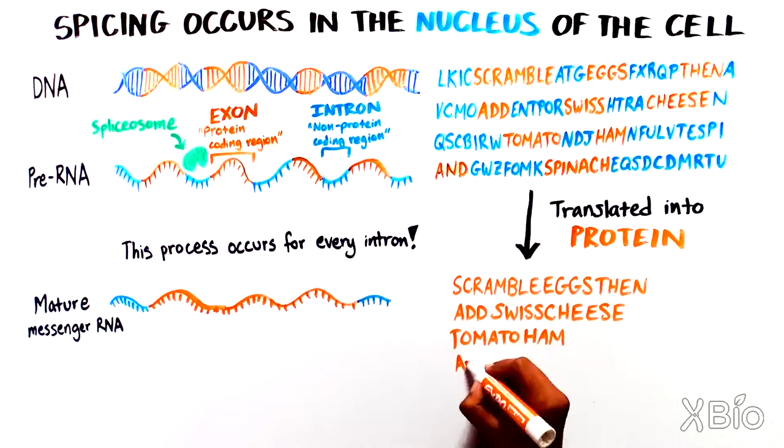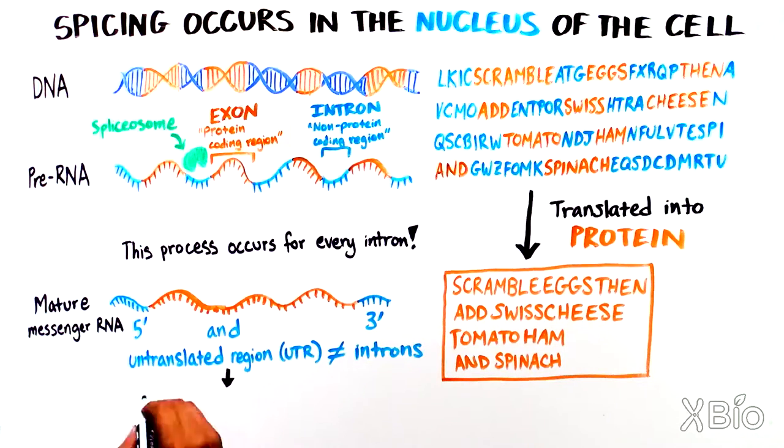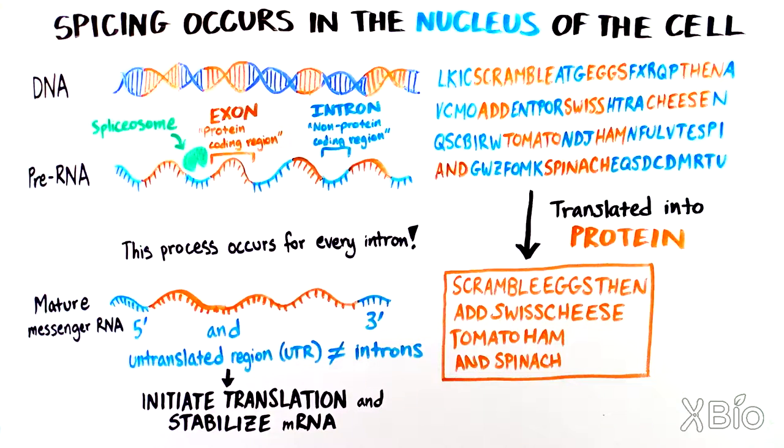You'll notice that there are also non-protein-coding regions at opposite ends of the mature mRNA. These are called the 5' and 3' untranslated regions, UTRs. Since these regions are not removed from the pre-mRNA during RNA splicing, they are not considered introns. Although they do not make proteins, these UTRs have important functions in the initiation of translation, which is the process of making protein from RNA, and in the stabilization of the mRNA molecule to prevent degradation.